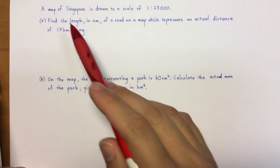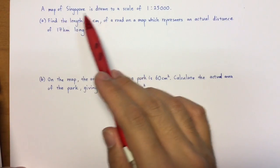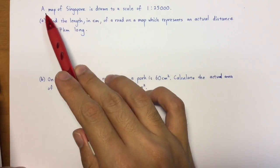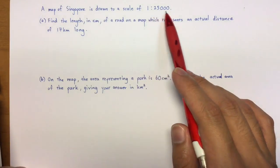Alright, so now we're going to do a question on the chapter of map and scale. So it says here, a map of Singapore is drawn to a scale of 1 is to 25,000.